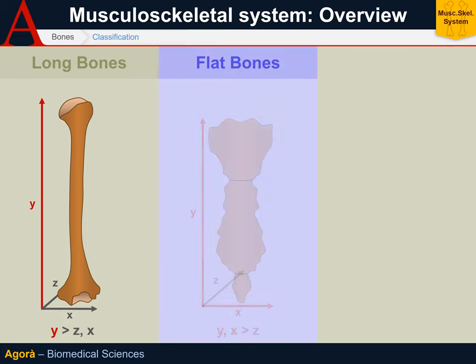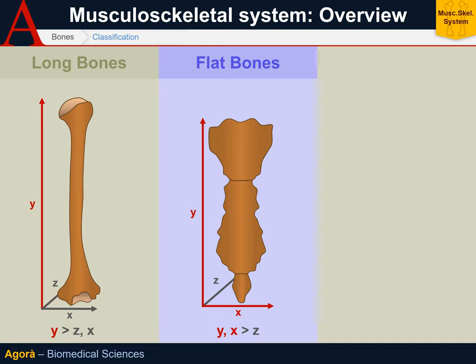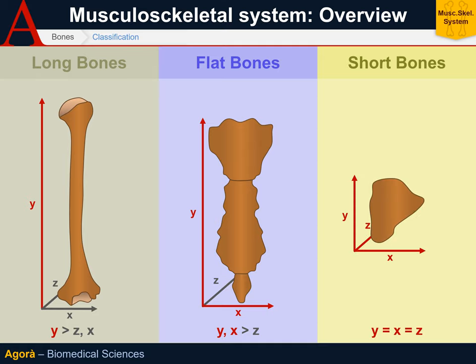Then there are the flat bones, where two dimensions clearly prevail over the third — an example is the sternum. Finally, there are the short bones, where all dimensions are more or less comparable — an example are the vertebrae. There are also bones that hardly fall into a precise classification, and therefore are defined as irregular.